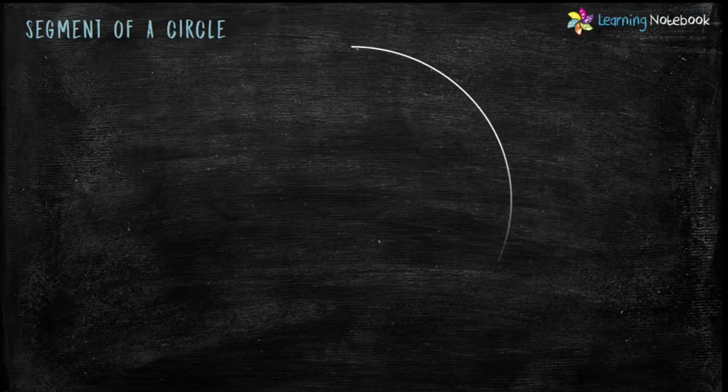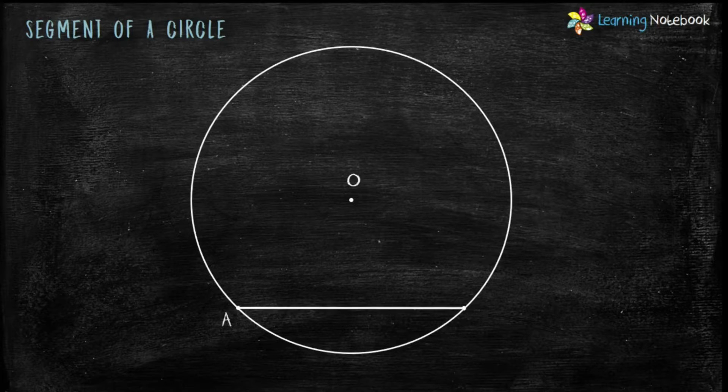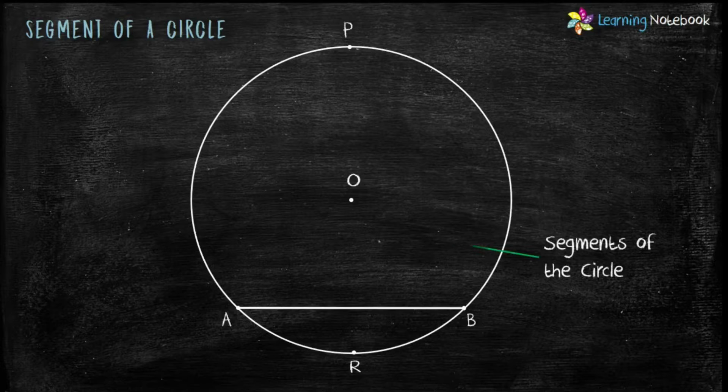Consider a circle of radius R and centre O. Let AB be the chord of the circle and P and R be the two points on this circle. Chord AB divides the area enclosed by the circle into two segments.